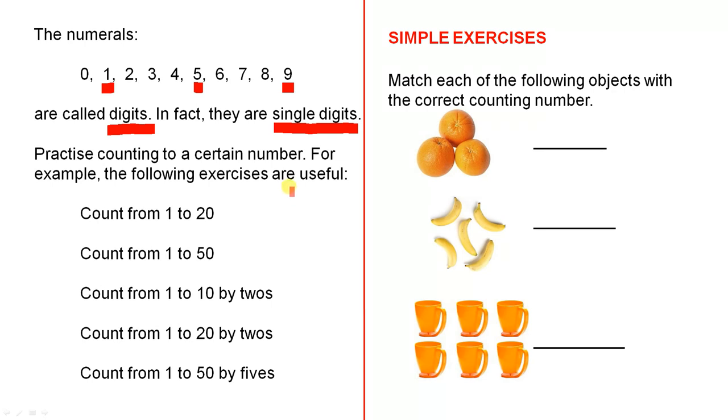Practice counting to a certain number. For example, the following exercises are useful. Count from 1 to 20. Count from 1 to 50. Count from 1 to 10 by 2's. I think you know what that means: 2, 4, 6, etc. Count from 1 to 20 by 2's, and count from 1 to 50 by 5's: 5, 10, 15, 20, etc.